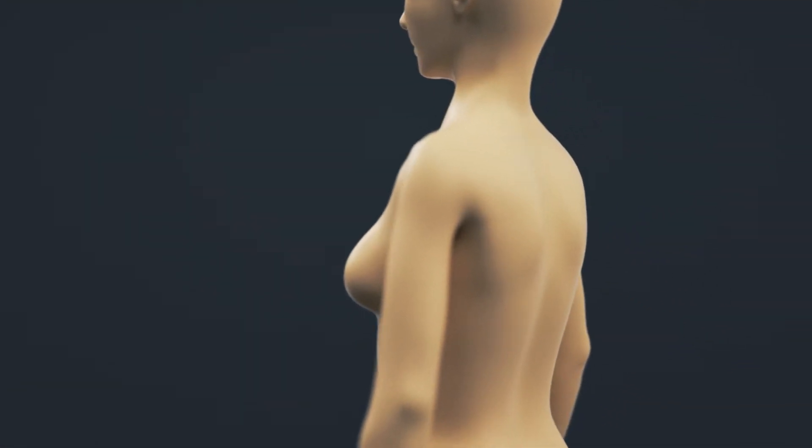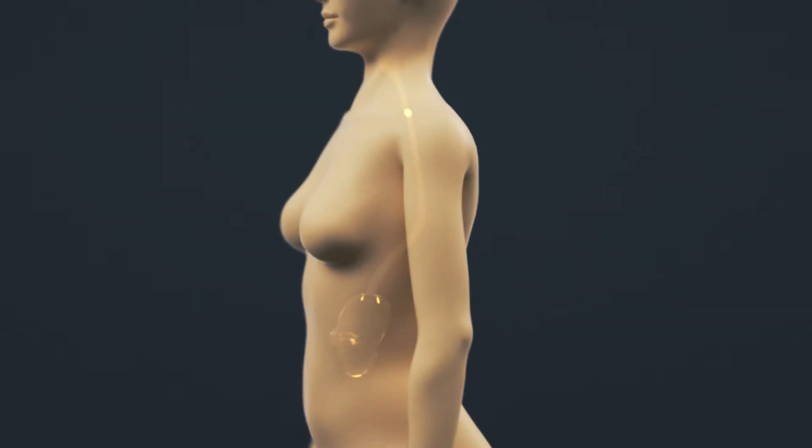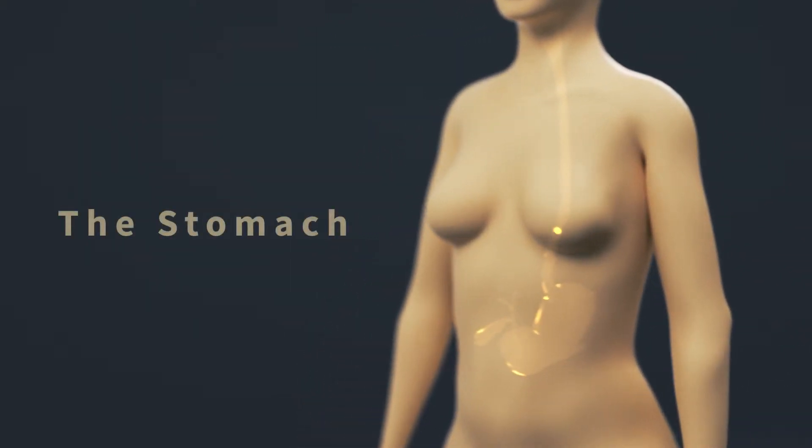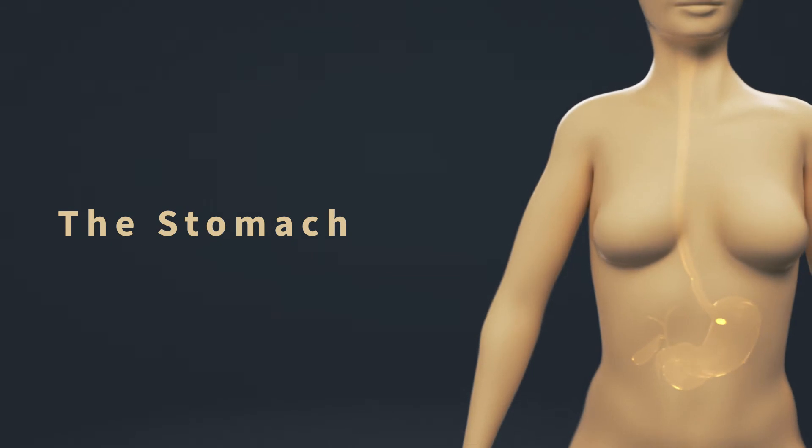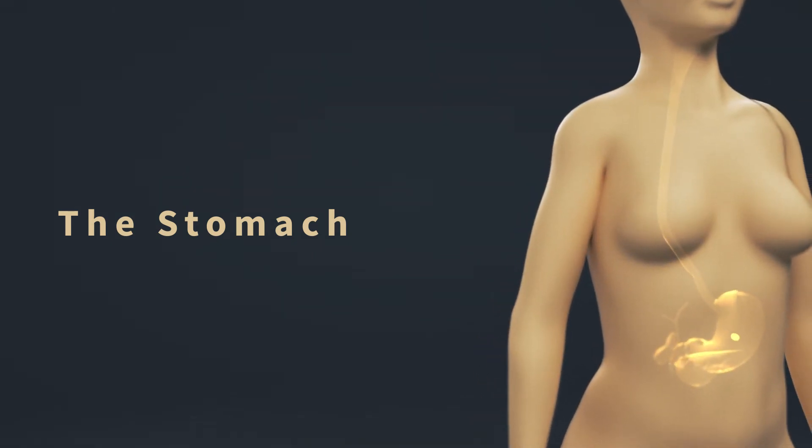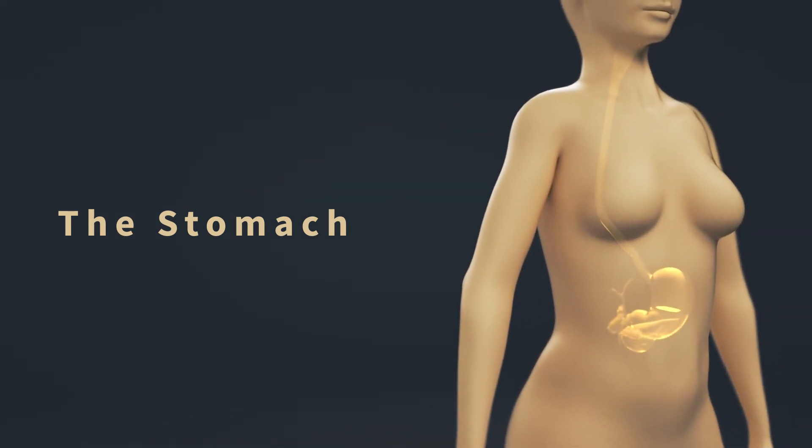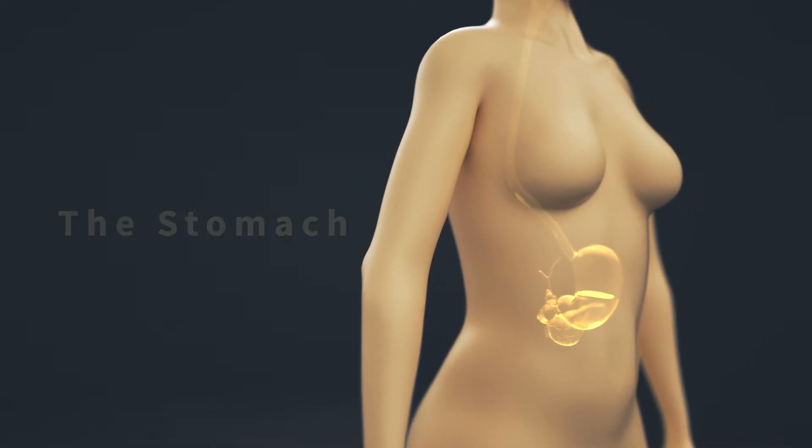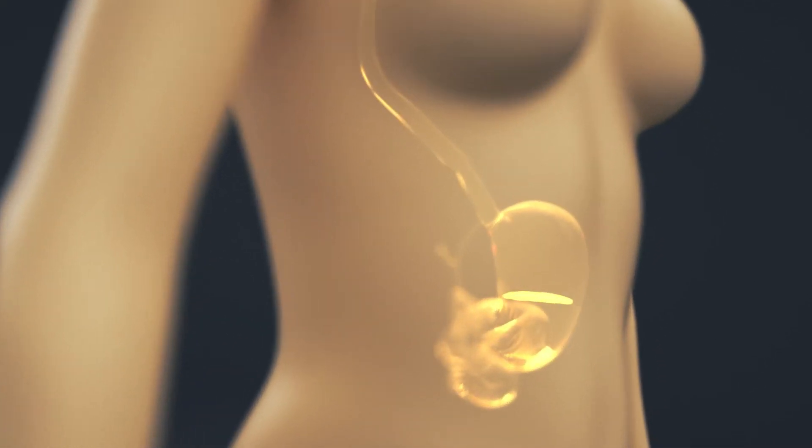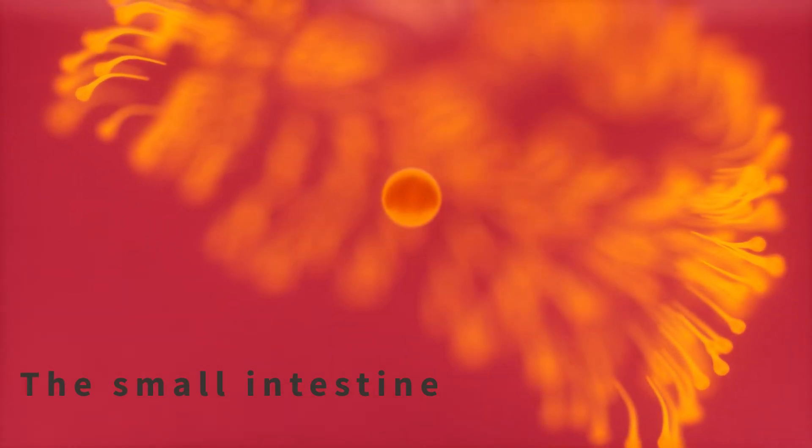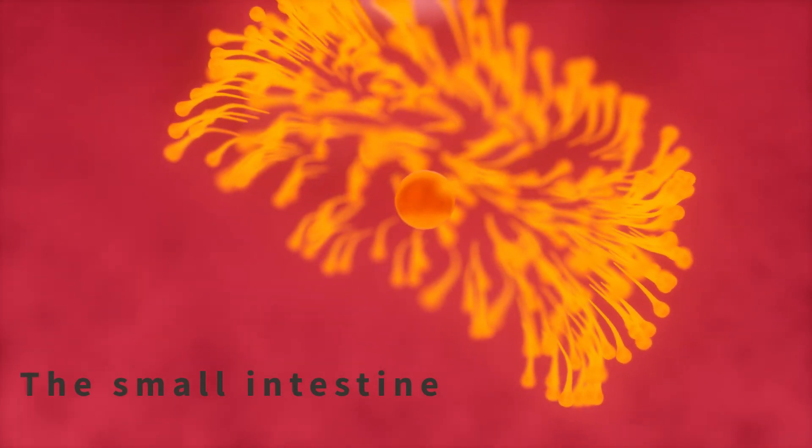Vitamin D is one of the lipid-soluble vitamins. When you ingest food with vitamin D or take the vitamin in supplement form, it starts by being broken down in the stomach, just like we saw with vitamin C. However, because vitamin D is lipid-soluble, it must get inside the lipid-containing micelles that are made by means of bile salts.